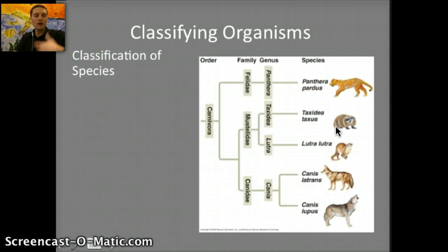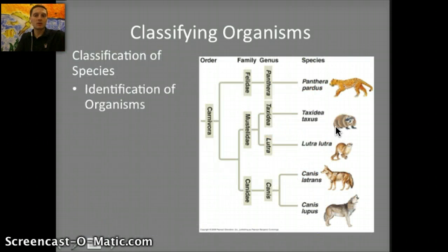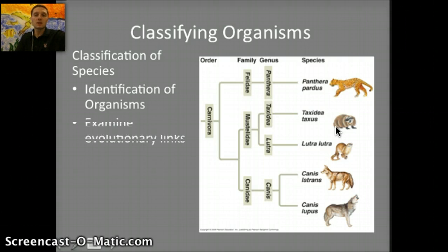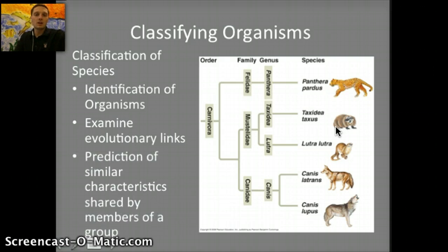Why do we classify species? There are some definite advantages to classifying species. One: identification of organisms. Two: to examine evolutionary links. Three: prediction of similar characteristics shared by members of a group.